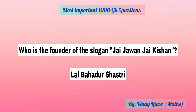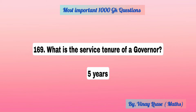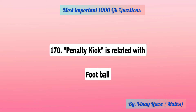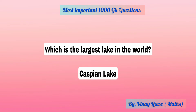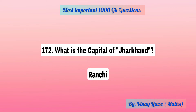Who is the founder of the slogan Jai Jawan, Jai Kisan? Lal Bahadur Shastri. What is the service tenure of a governor? 5 years. Penalty kick is related with football. Which is the largest lake in the world? Caspian Lake. What is the capital of Jharkhand? Ranchi.